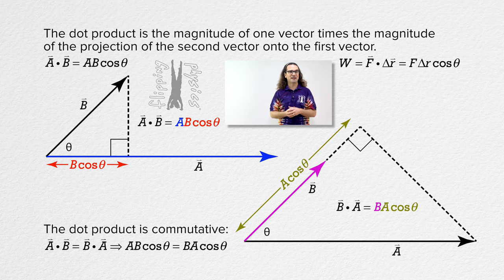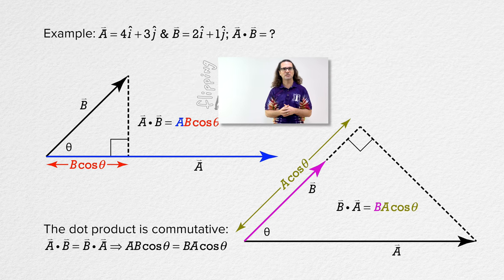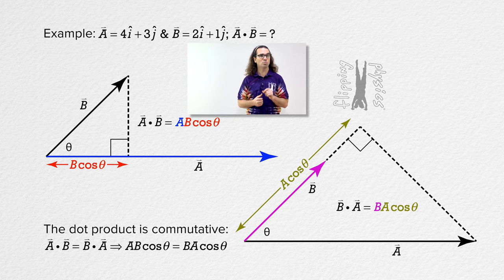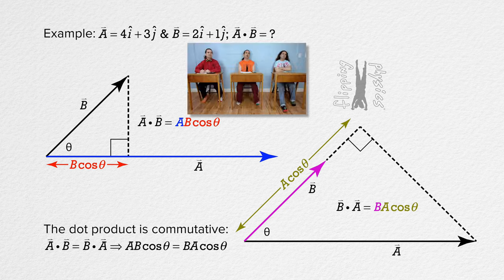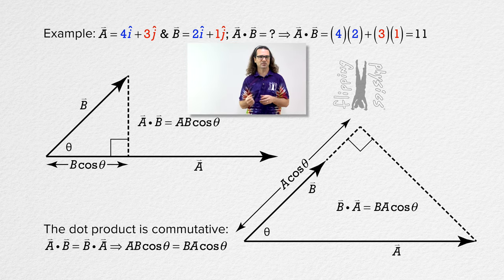Now let's do a simple unit vector example to help us recall how to solve the dot product using unit vectors. Vector a equals 4i plus 3j and vector b equals 2i plus 1j. Bobby, please solve for the dot product of a and b. Is it like 4 times 2 plus 3 times 1? You multiply all the i values together and all the j values together and then add those together — it works out to be 11. Okay, let's understand why this works.